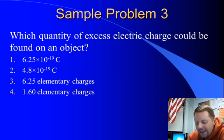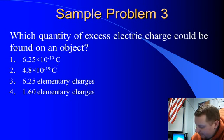Which quantity of excess electric charge could be found on an object? And we've got a bunch of choices. 6.2 times 10 to the minus 19 coulombs. 4.8 times 10 to the minus 19 coulombs. 6.25 elementary charges or 1.6 elementary charges.